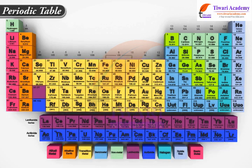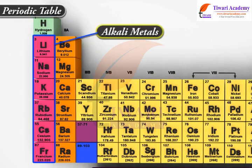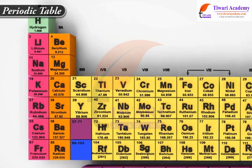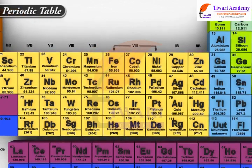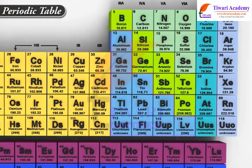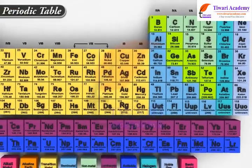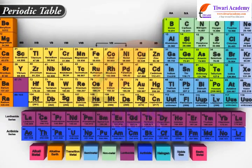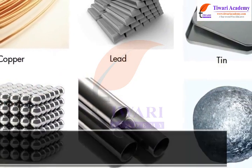Metals are located on the left side and the middle of the periodic table. Group 1A and Group 2A, the alkali metals, are the most active metals. The transition elements are also considered metals. The basic metals are the elements to the right of the transition metals. The bottom two rows of elements beneath the body of the periodic table are the lanthanides and actinides, which are also metals.